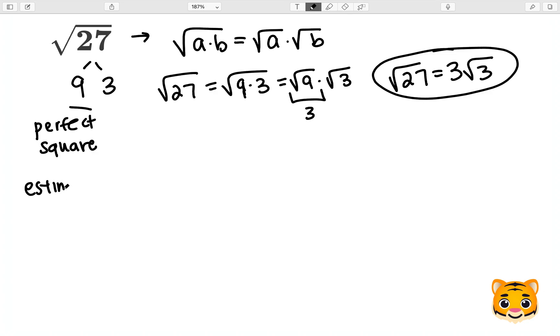Now if we want to look at estimating the square root of 27 to the nearest whole number, we will look at the perfect squares nearby. First, take a look at 5 squared which is 25, and 6 squared which is 36.